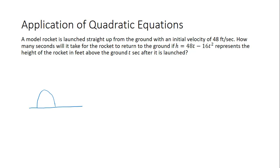We know the height is represented by the expression 48t minus 16t squared. Well, the height of the rocket when it's on the ground is 0 feet above the ground, so we set the height equal to 0 and solve.